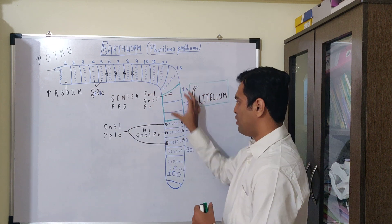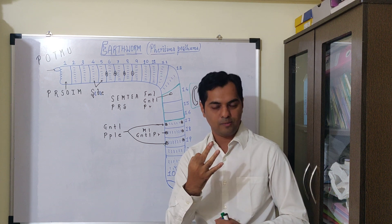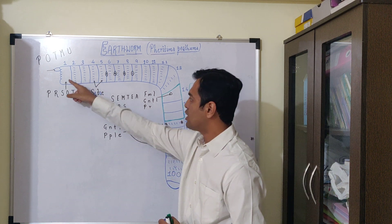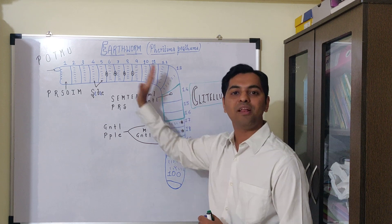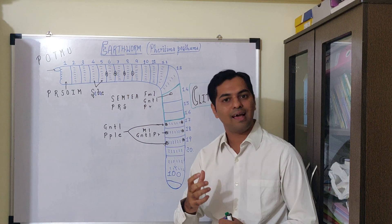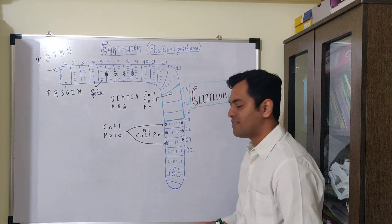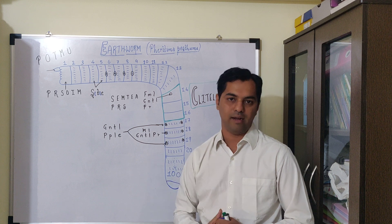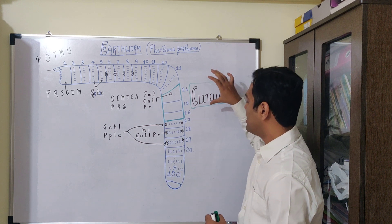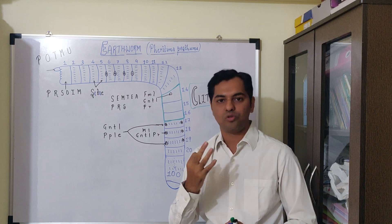The external morphology of earthworm is divided into three parts: segment 1 to 13th is pre-clitellum, segment 14th to 16th is clitellum, and segment 17th to the last is post-clitellum. Clitellum is the reference point for dividing the body.